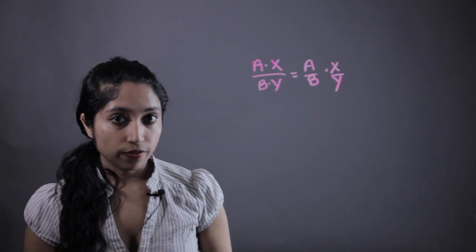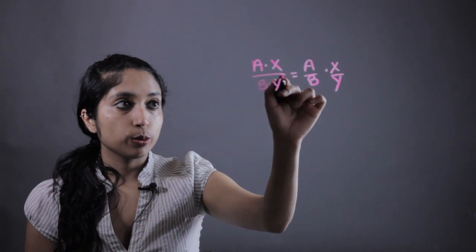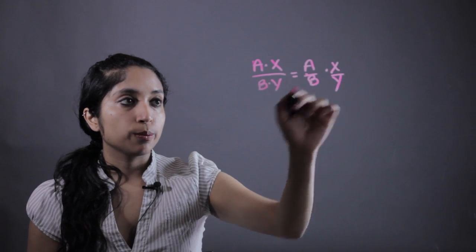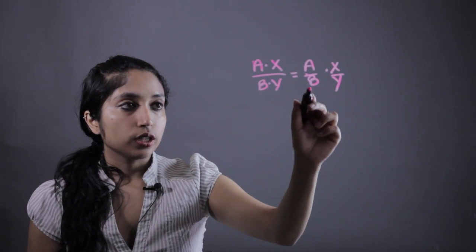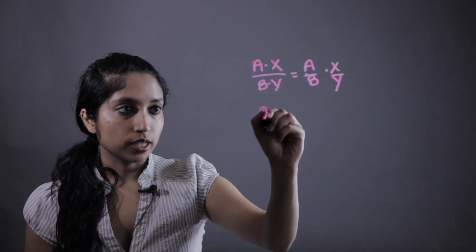Now, when we're simplifying fractions, what we're going to want to do is factor the numbers we're given into their individual components and look for what we can cross out, the common factors. So, I'm going to work through an example to help reinforce that.